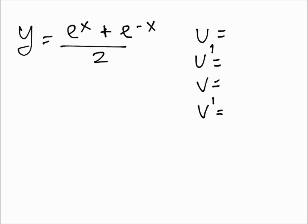u is our e^x + e^(-x), v is the denominator which is 2, v prime is 0 because the derivative of 2 is 0, and then u prime is e^x - e^(-x).